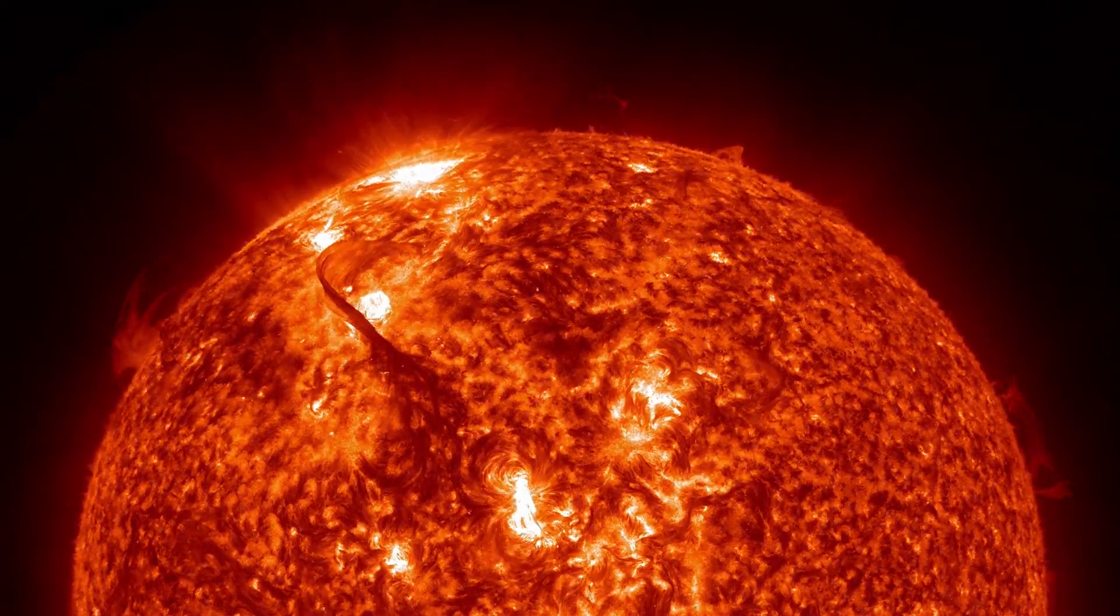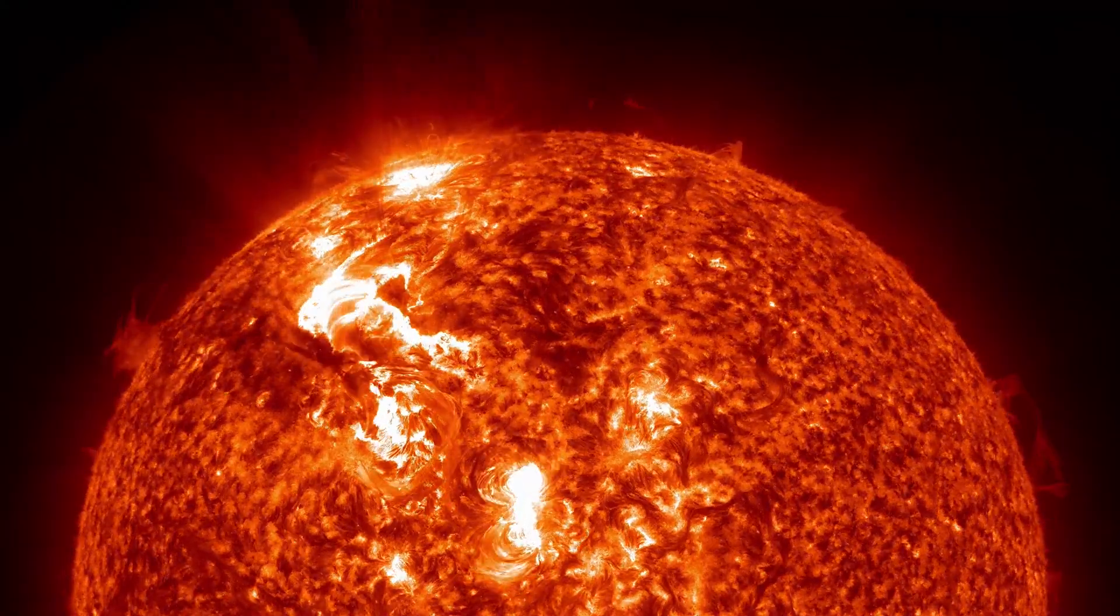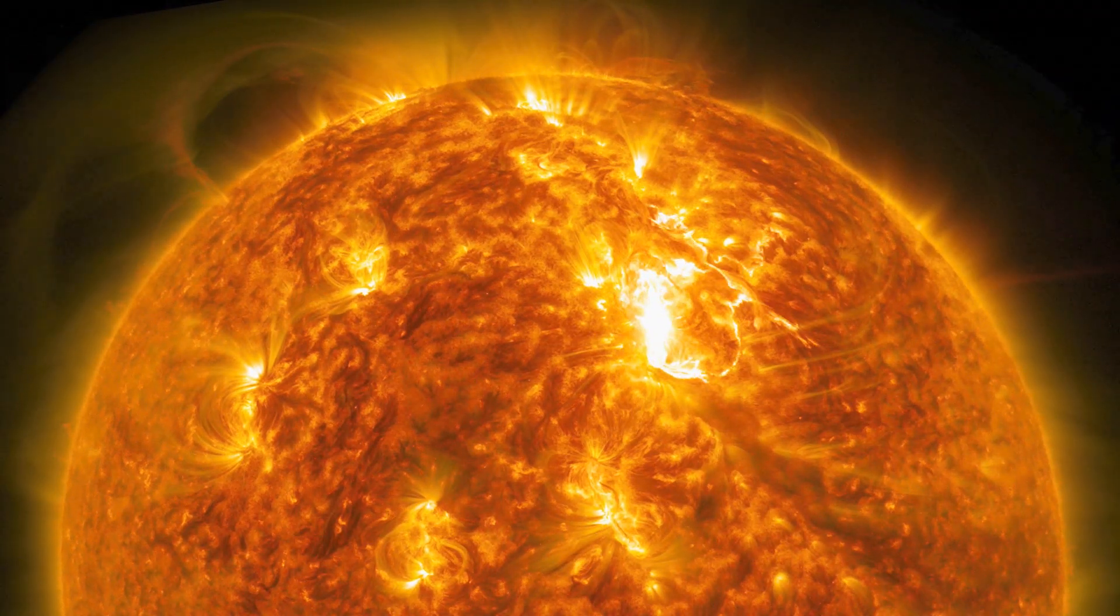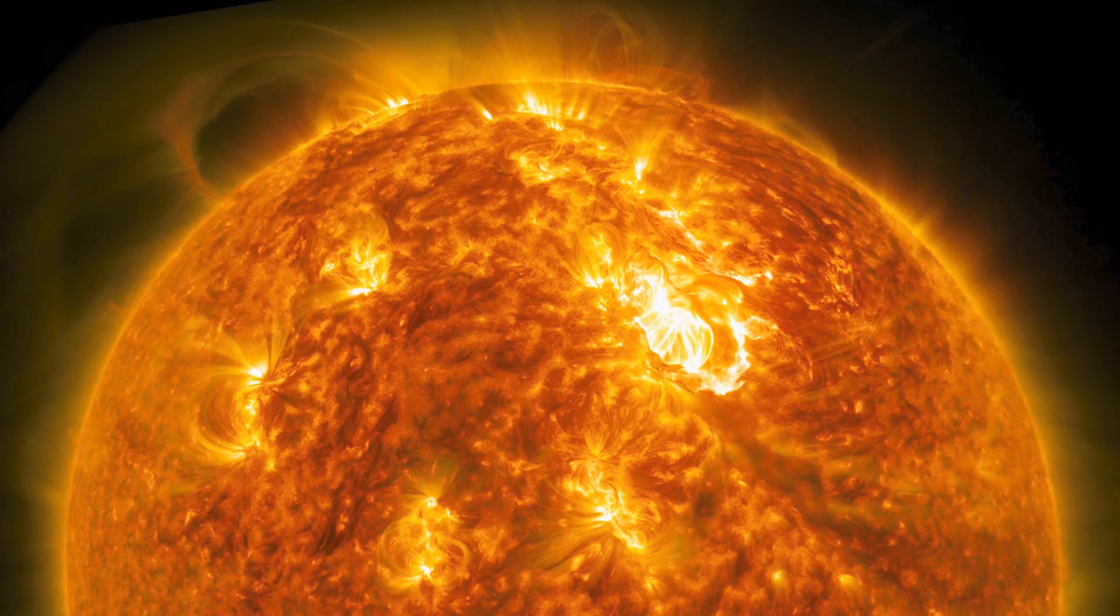Solar flares. The Sun emits powerful bursts of radiation known as solar flares. These flares can affect Earth's magnetosphere, leading to beautiful auroras and sometimes disrupting communications.